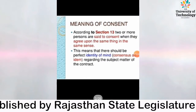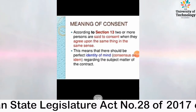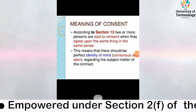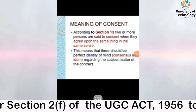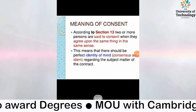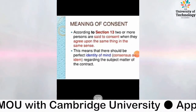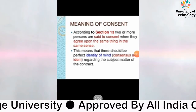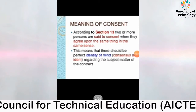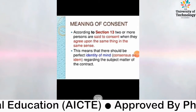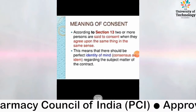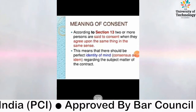Two or more persons are said to consent when they agree upon the same thing in the same sense. जब दो या दो से अधिक व्यक्ति एक ही बात पर एक ही भाव से सहमत हो जाते हैं तो उसे सहमती कहा जाता है। इसमें दो important चीज़ें हैं: same thing पर सहमति और same sense रखते हुए सहमति। This means that there should be perfect identity of mind.